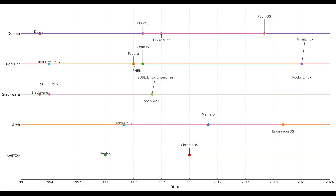In this graph, you can see on the left: Debian, Red Hat, Slackware, Arch, and Gentoo — these are the originators from Linus Torvalds' kernel. From Debian you get Ubuntu, Linux Mint, Pop OS. From Red Hat you get Fedora, CentOS, Alma Linux, Rocky Linux. From Slackware you get SUSE and openSUSE. Then came Arch Linux — Manjaro, Endeavour, CachyOS — and Gentoo, which is the fundamental basis of Chrome OS.